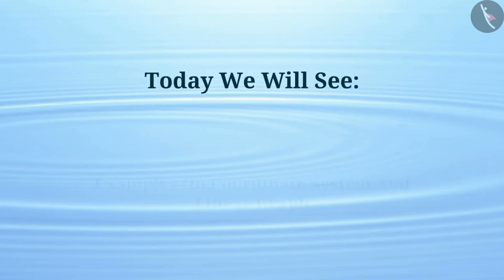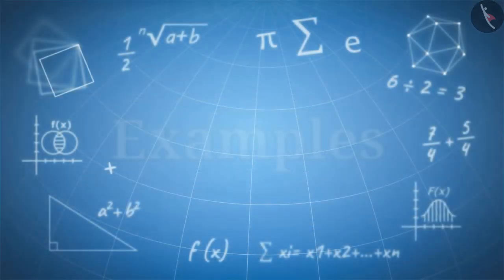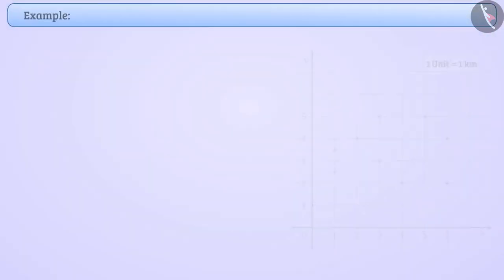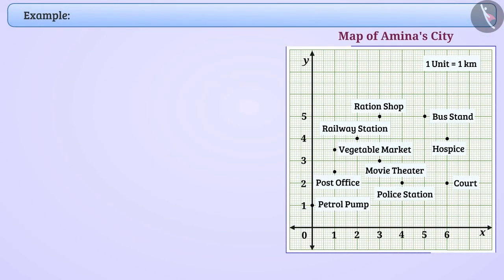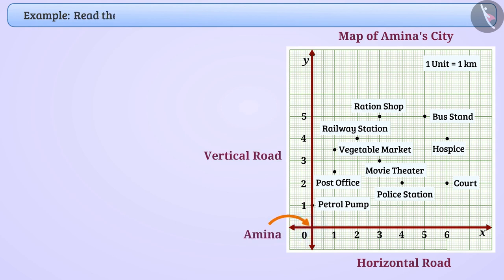Today we will see some more examples on Coordinate System and Linear Graph. Below is the map of Amina's city. Suppose the x-axis represents the horizontal road and the y-axis represents the vertical road, and Amina stands at the intersection. Read the map and answer the questions asked.